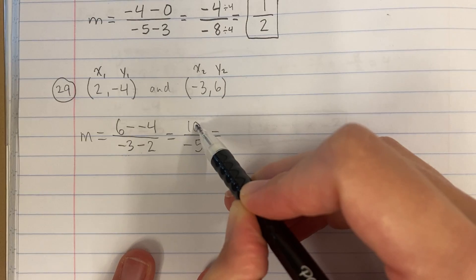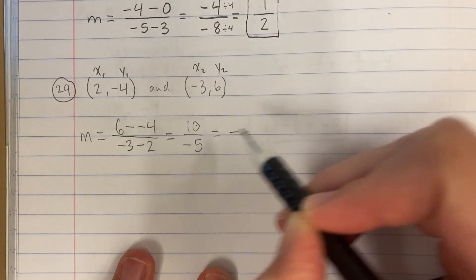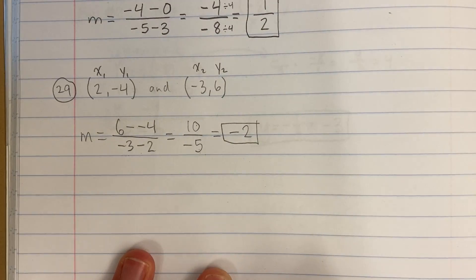10 divided by negative 5, positive by negative is negative. 10 divided by 5 is 2. And that's my answer.